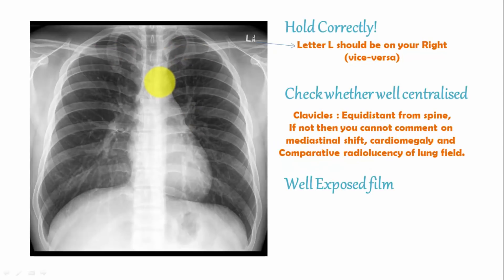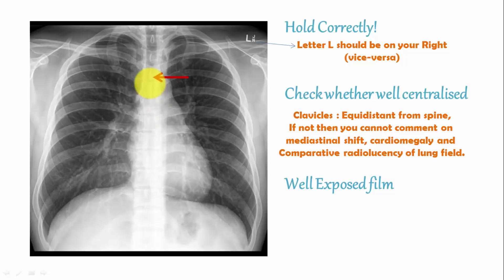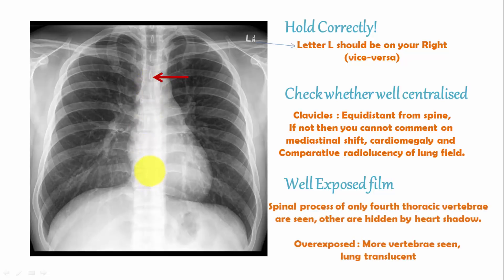Next, check whether the film is well exposed. If the film is well exposed, you will be able to see the spinous process of the fourth thoracic vertebra, and the rest of the spinous processes will be hidden by the cardiac shadow. If it is overexposed, more spinous processes will be seen and the lung fields will appear translucent.